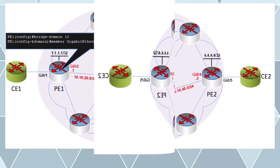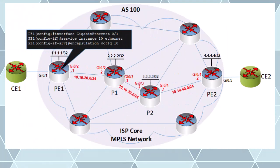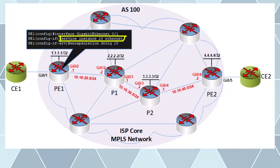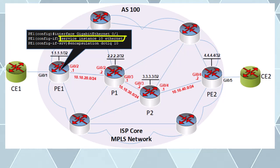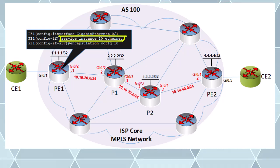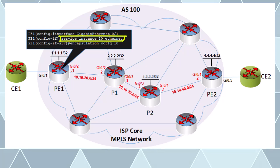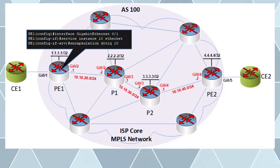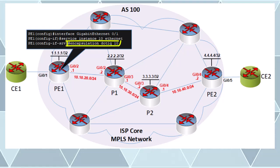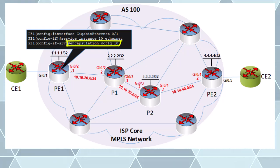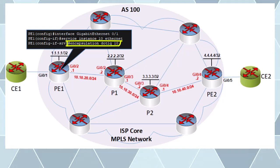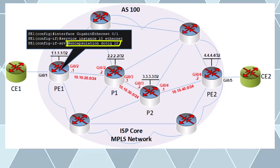We have our bridge domain and our service instance, and we've mapped our interface to that bridge domain. Now we can configure our customer-facing interface. This interface configuration associates the interface with the service instance we created and specifies Ethernet as the protocol used for that instance. The last thing we must do is tell the device how it will identify traffic that belongs to that service instance — using this command, any traffic tagged with an 802.1Q tag of 10 will be processed by that instance.